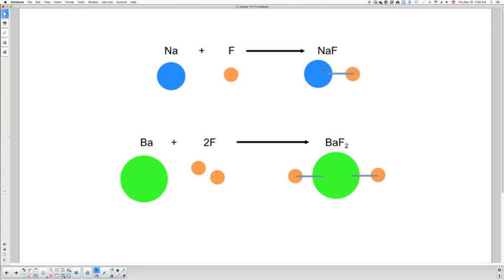So Na and F will react together and create a bond. Sodium is in group one, creates one bond because it loses one electron. Fluorine is in group seven, so the halogens, right? So it will need to gain one electron, so it will create one bond. So that one bond is represented here between the two atoms.